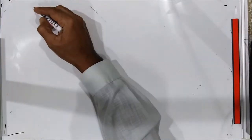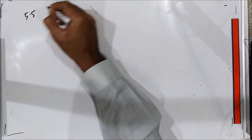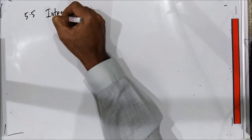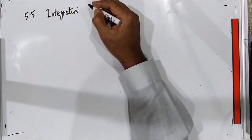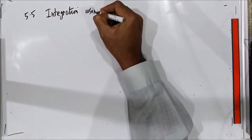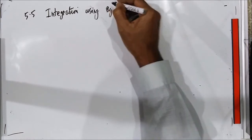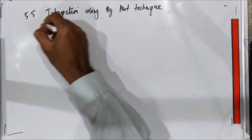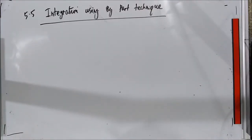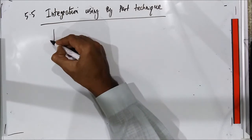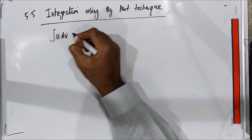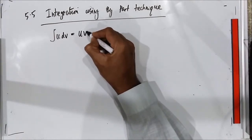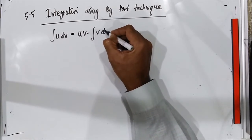Now another integration technique is integration by parts, Section 5.5. The general formula for integration by parts is: the integral of u dv equals uv minus the integral of v du.